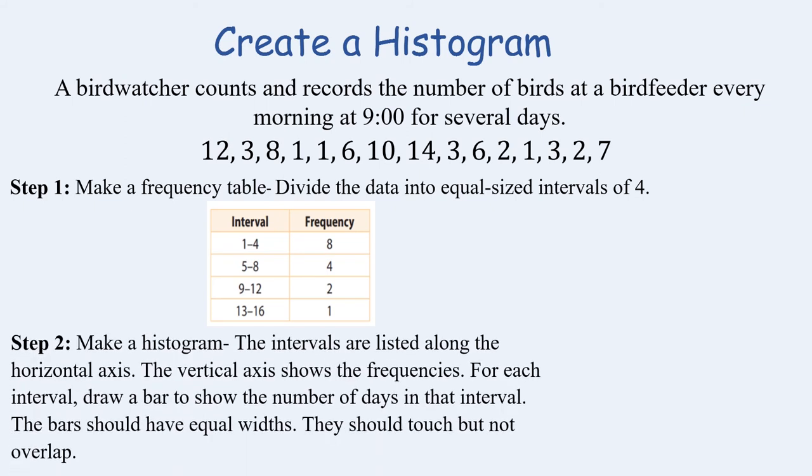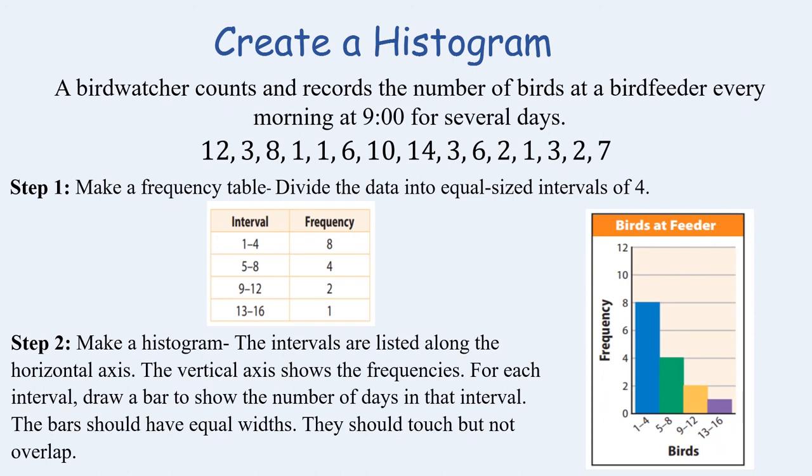Second, in order to make the histogram intervals are listed along the horizontal axis. The vertical axis will show the frequency. So for each interval you're going to draw a bar to show the number of days in that interval just like a bar graph.